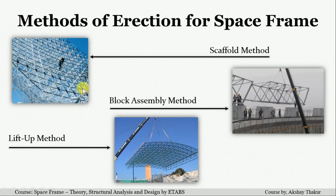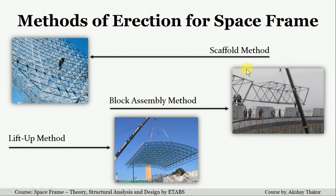Here you can see the visual image for each different method. This is the scaffold method image, where you can see the workers work at the elevation where the space frame is. In the block assembly method, the blockwise work is done by hoisting the space frame assembled at the ground level. In the lift up method, the whole space frame is assembled at the ground level and hoisted to its location by crane.